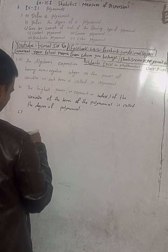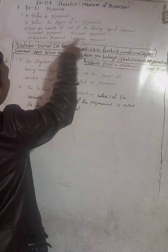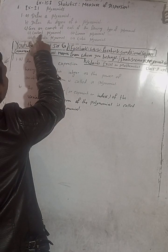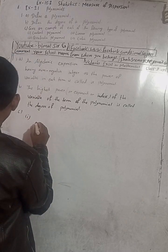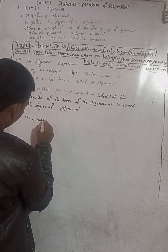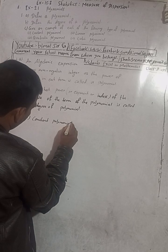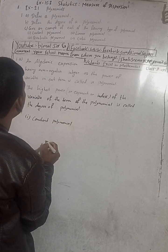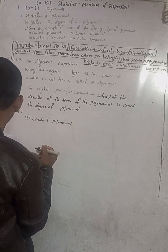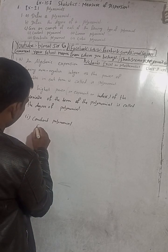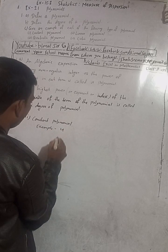Now question C: give an example of each of the different types of polynomial. Four types of polynomial are given. The first type is constant polynomial. An example of a constant polynomial is 4. So 4 is a constant polynomial.